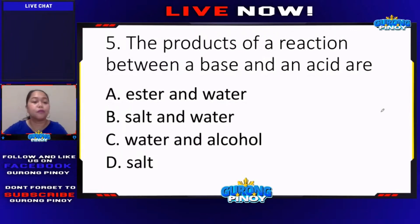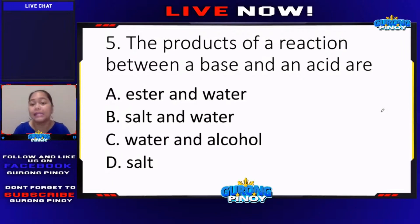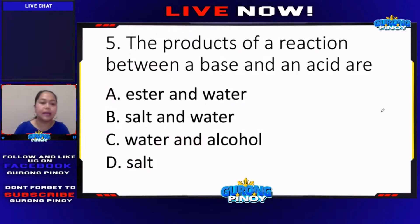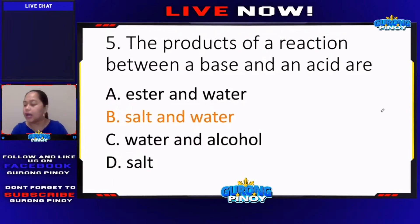What do you think is the correct answer for number five? The question is: the products of a reaction between a base and an acid are letter A, ester and water; letter B, salt and water; letter C, water and alcohol; letter D, salt alone. The correct answer for this one is letter B — that's salt and water.